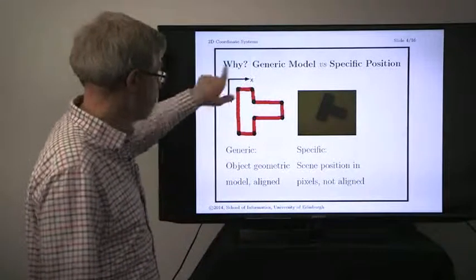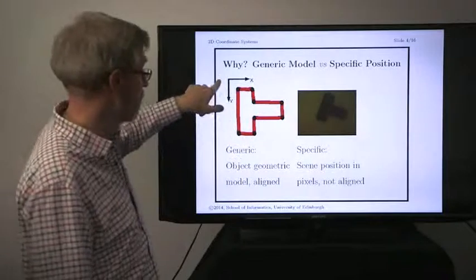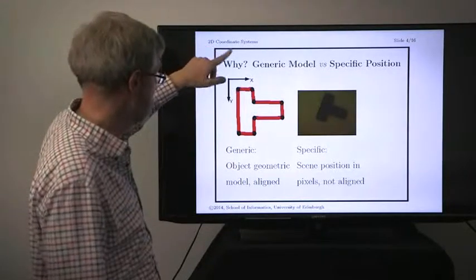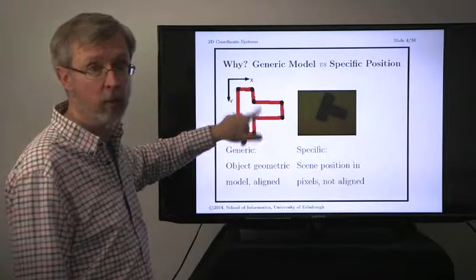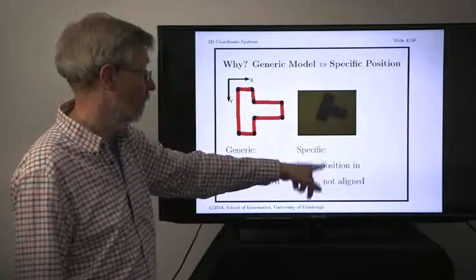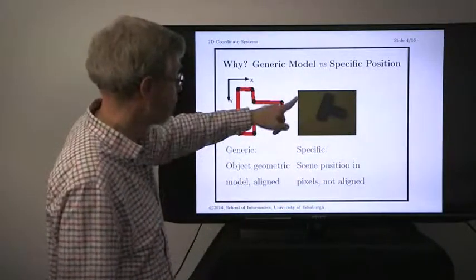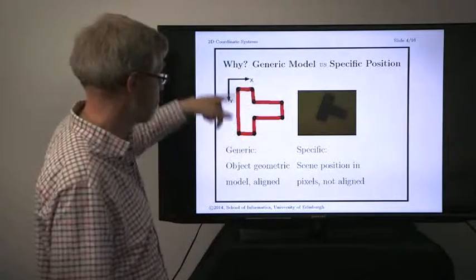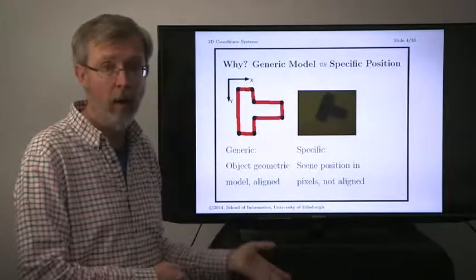We want to have general models. The coordinate system origin is typically in the upper left-hand corner — that's where images start their coordinate system origin. We want to describe objects with some sort of generic description, usually aligned relative to the coordinate axes, because that's convenient for modeling. On the other hand, we're also going to want specific coordinate systems for talking about where the object is in the scene, because objects can move around. So we're going to have a mixture of both specific and generic coordinate systems, and we're going to want ways to talk about how one relates to the other.